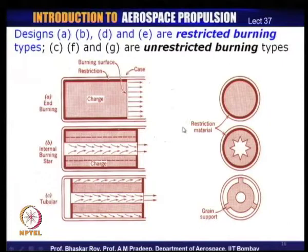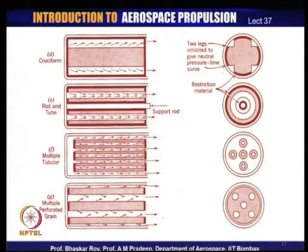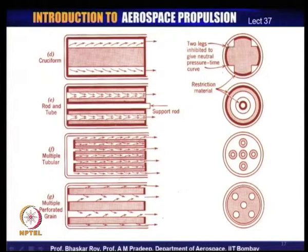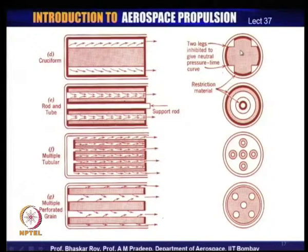Looking at more grain designs: type D has a cruciform or cross-shaped interior where surfaces are open to burning, with inhibitors holding the propellant firmly in place — these are the restricted surfaces, while the cross-shaped surfaces are the unrestricted burning surfaces. Type E has restrictions on the inner circle and outermost circular shape; a supporting rod holds the propellant, with the inner annulus surfaces open to burning.